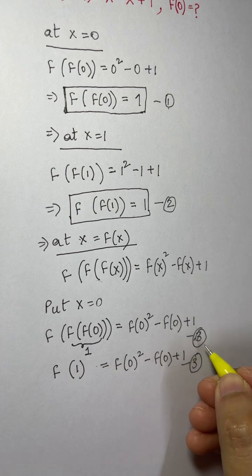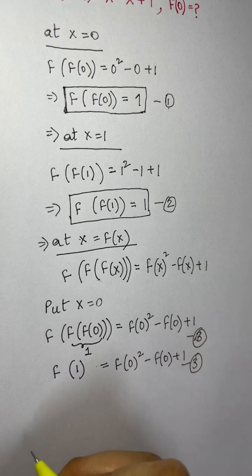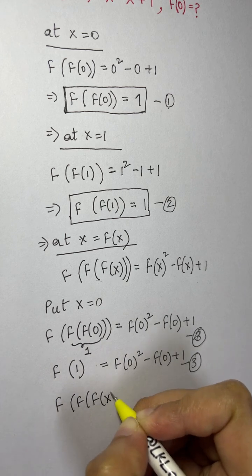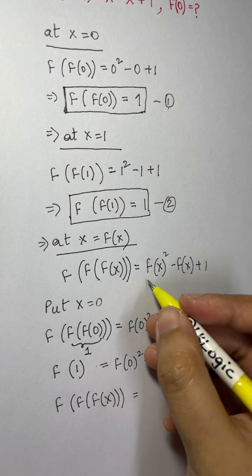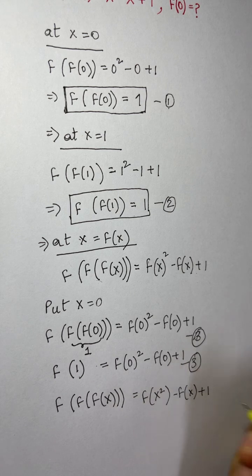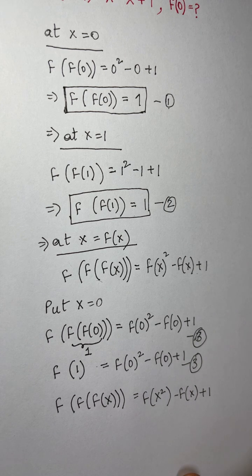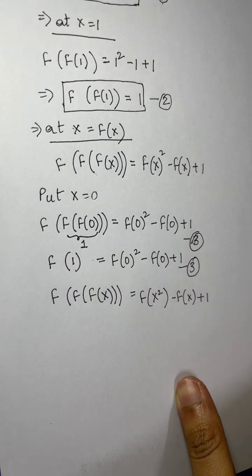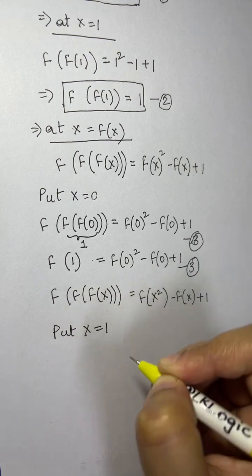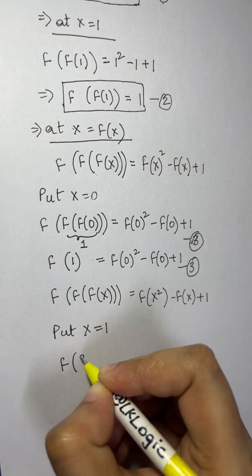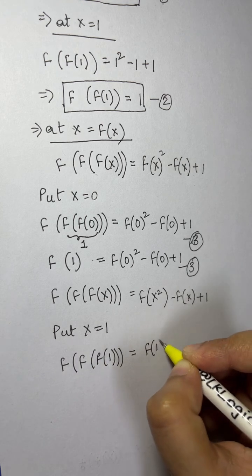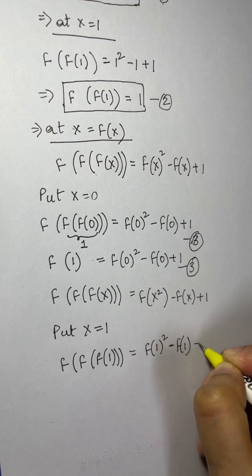We got f(1) = [f(0)]² - f(0) + 1, so let that be Equation 3. Now putting x = 1 into the derived expression f(f(f(x))) = [f(x)]² - f(x) + 1, we get f(f(f(1))) = [f(1)]² - f(1) + 1.